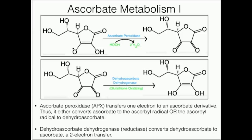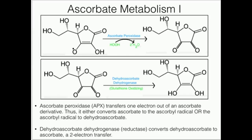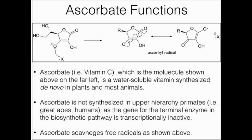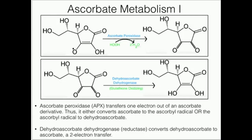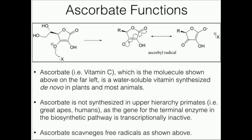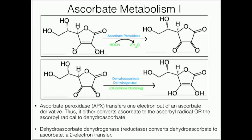We have some enzymes that are very important in what we call ascorbate metabolism. One of the most important is ascorbate peroxidase. Ascorbate peroxidase always takes one electron away from ascorbate or any ascorbate derivative. So if ascorbate peroxidase reacts with completely neutral ascorbate — basically the ascorbate shown right here, which has no radicals — it could convert it into the ascorbal radical. If ascorbate peroxidase then reacts with the ascorbal radical, it's going to convert it to dehydroascorbate. So if you wanted to convert ascorbate all the way to dehydroascorbate, you'd need two reactions of ascorbate peroxidase.